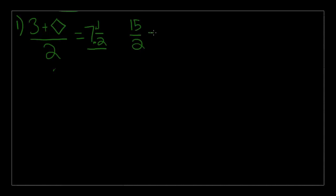15 over 2 is equal to this equation of 3 plus diamond over 2. So, the denominators are the same, so we don't really need to worry about those anymore. So our equation is now just 15 is equal to 3 plus diamond. And therefore, if we subtract 3 from both sides, diamond is equal to 12, and that is choice D.